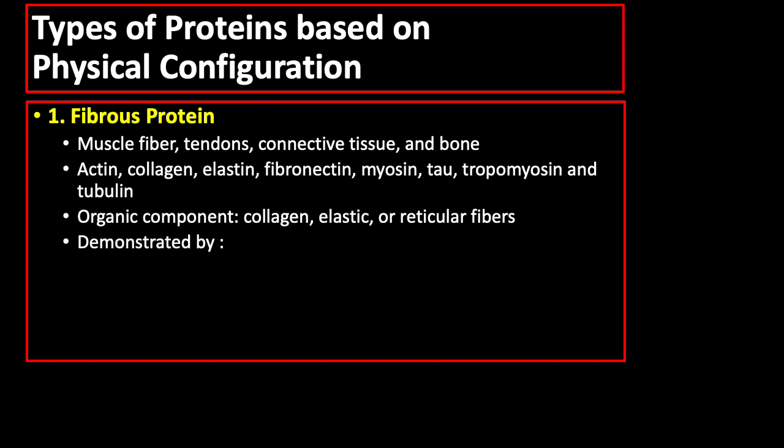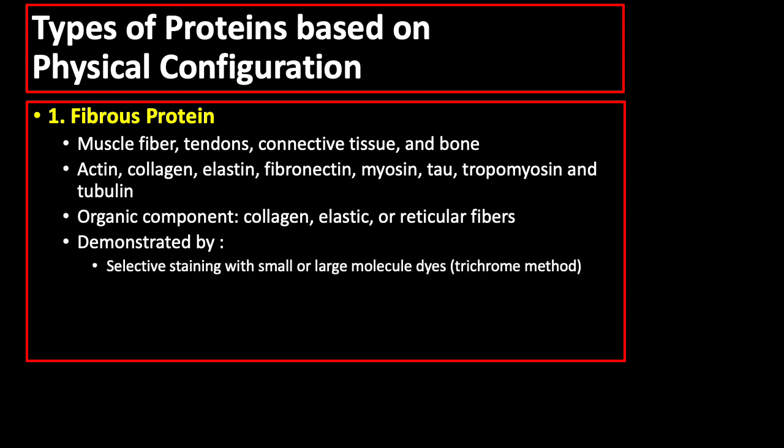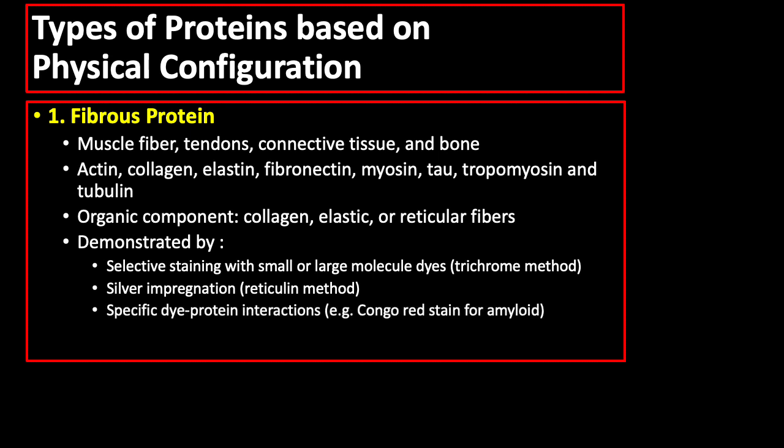Fibrous proteins can be demonstrated by selective staining with small or large molecule dyes like the trichrome method, silver impregnation like the reticulin method, or specific dye-protein interactions such as Congo red stain for amyloid.